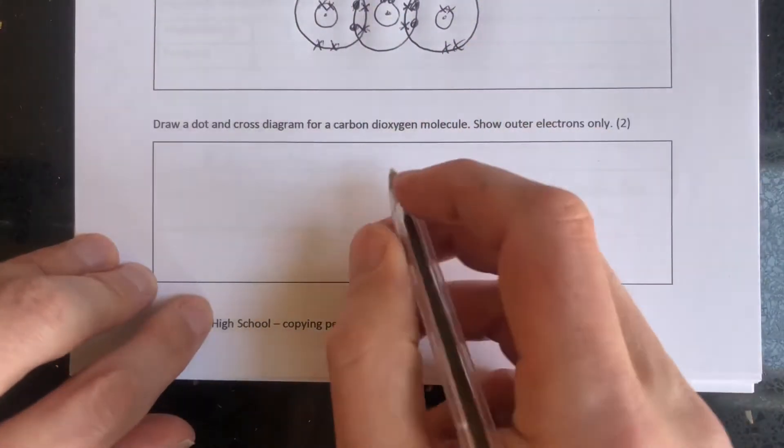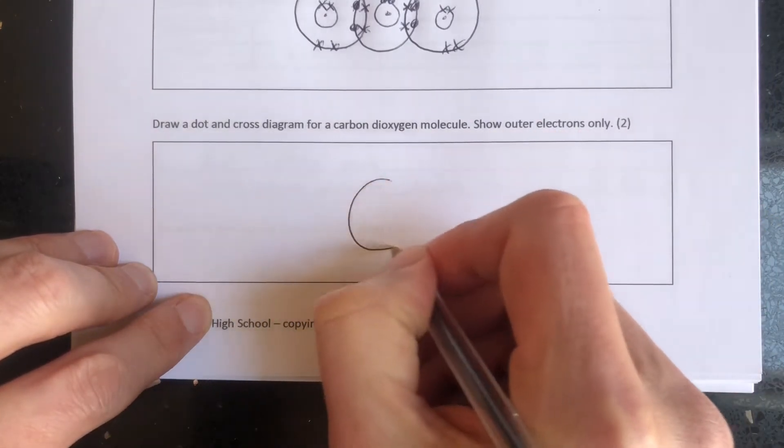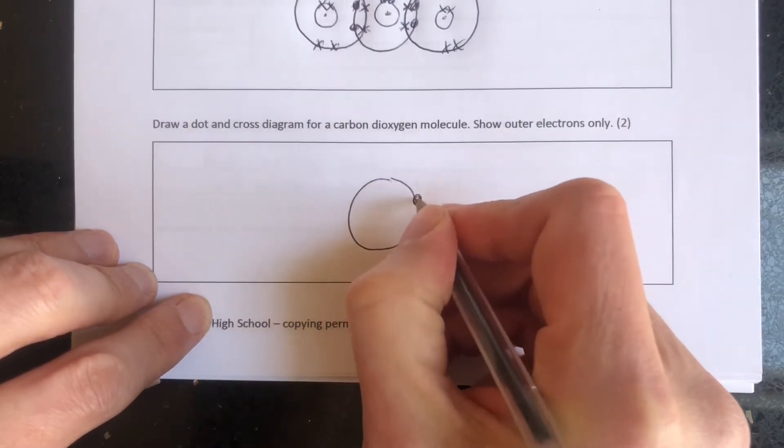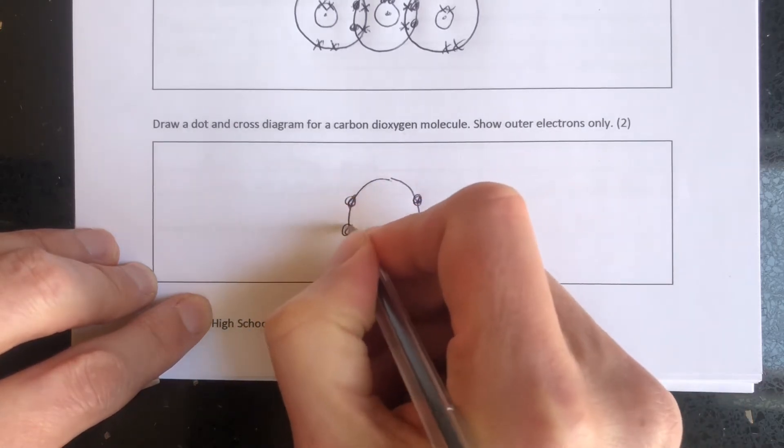So carbon, six electrons. Two would have gone on the first shell. We're only showing outer shell electrons, so it's going to be four on the second shell. So carbon needs four extra electrons to fill those outer shells, therefore it's going to form four covalent bonds.